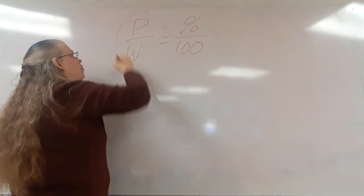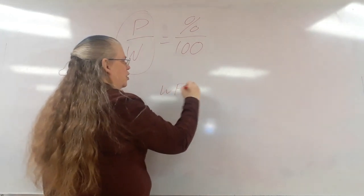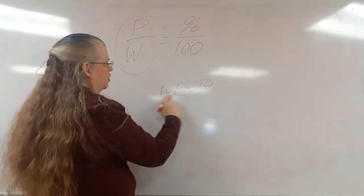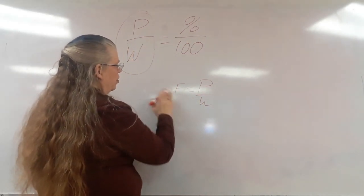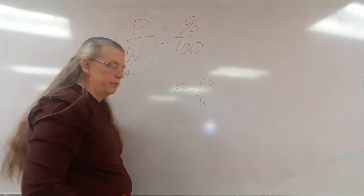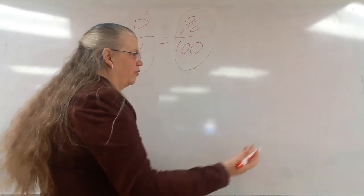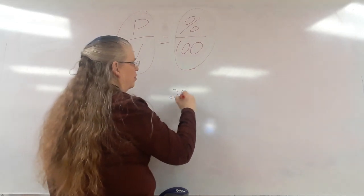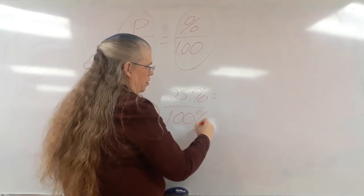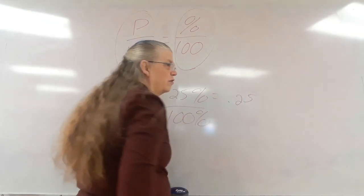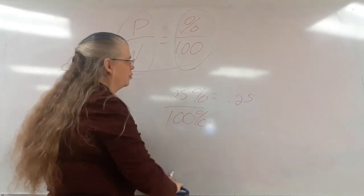Part over whole equals percent over 100. This is how we want to set up everything that we do in percentages. Part over whole is the definition of the fraction. Remember we had whole times fraction equals part. Well, if we divide both sides by whole, we have that the fraction is part over whole. This is the decimal part. For example, if we have 25%, that's 25 over 100, which is 0.25.